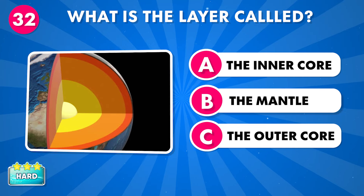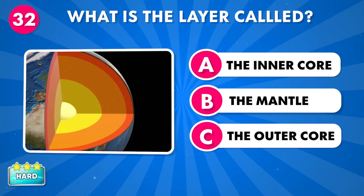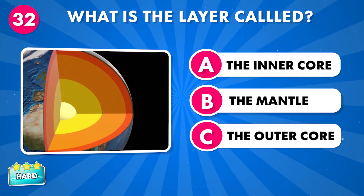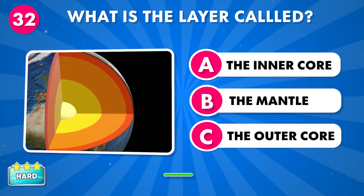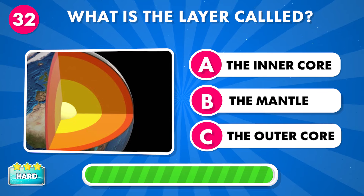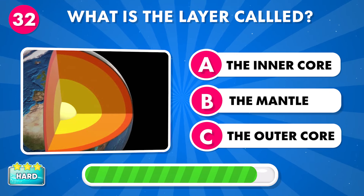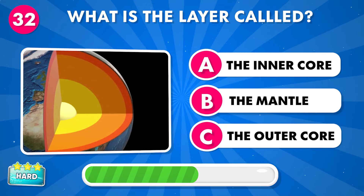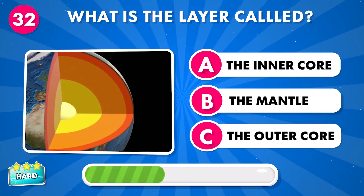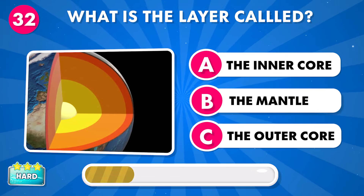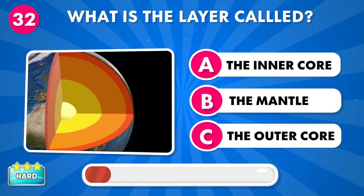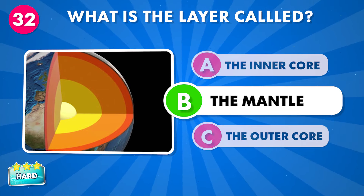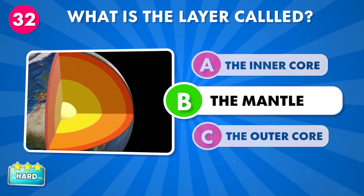What is this layer called? A: the inner core, B: the mantle, C: the outer core. It's the mantle.